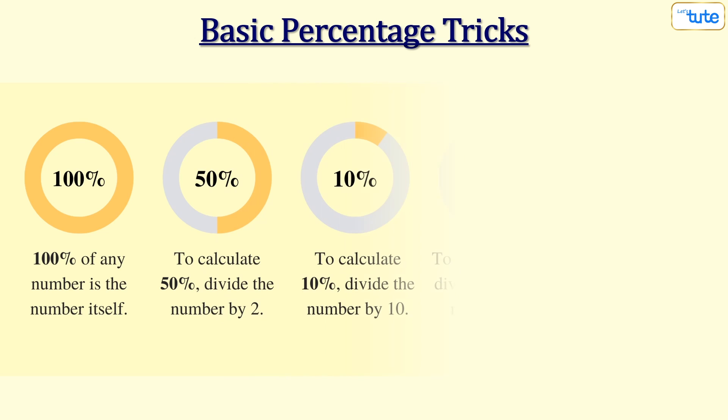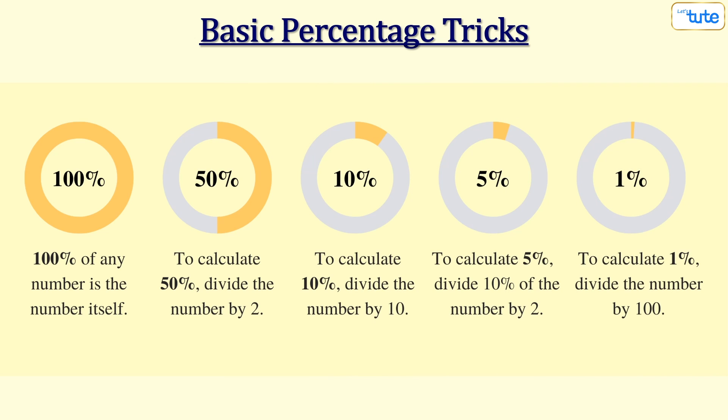Let's now summarize what all we have learned till now. Now as we know the basic percentage tricks, let's try finding out the value of a 12 percent discount on 700.